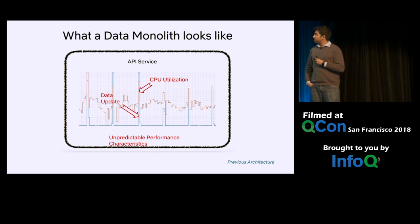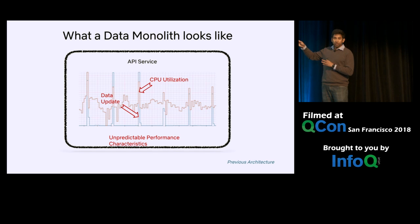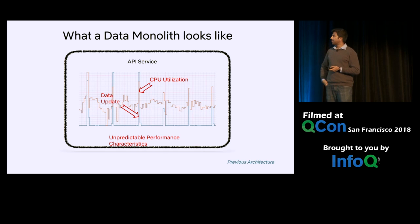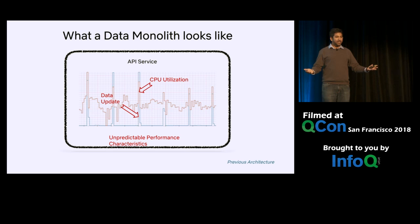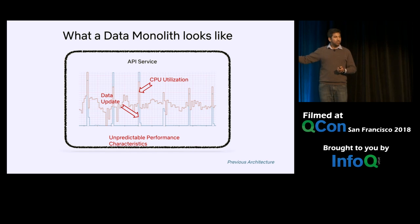The third observation was that whenever there was a data update, we could see a correlated degradation in performance. In this particular graph, you could see that whenever there was a data update, there was an increase in CPU utilization, increasing GC pressure, and an increase in latencies. So if somebody asked what is the steady-state performance of the API service, we were unable to say — because it kept varying depending on when there was a data update.